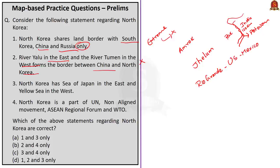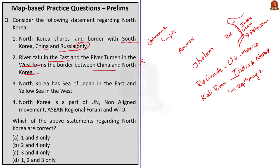The third river is river Kali. In May 2020, there was a border issue between India and Nepal regarding the Kalapani area, so this may appear in this year's prelims. River Kali forms the boundary between Nepal and India. We have already covered this in our newspaper discussion from 24th May 2020. The border between Nepal and India is based on the Treaty of Sugauli of 1815.